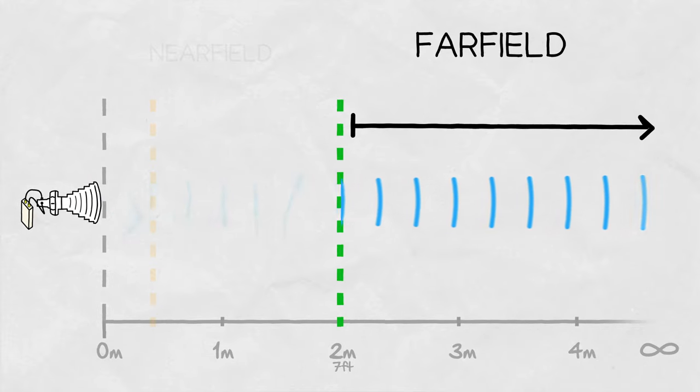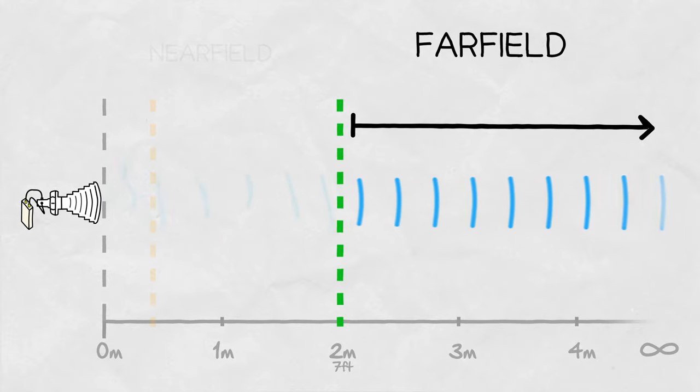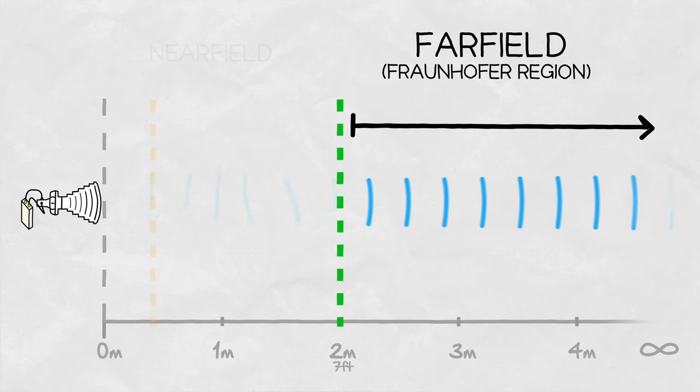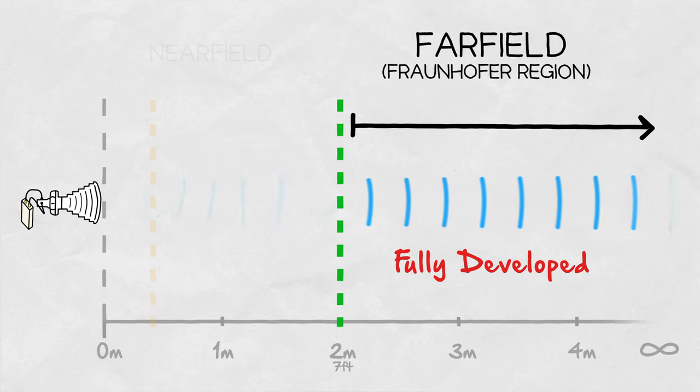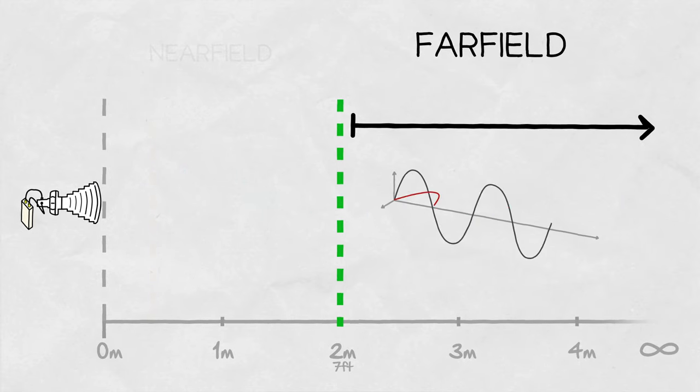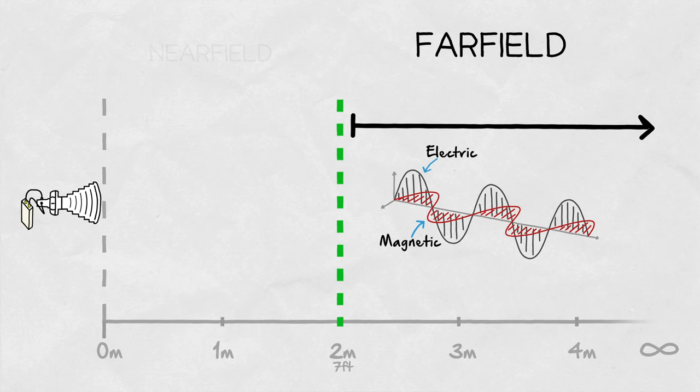the far field region. Also known as the radiation field or the Fraunhofer region, it is the region far away from the antenna where the electromagnetic waves have fully developed and exhibit a simple, predictable behavior. They propagate as planar waves with the electric and magnetic fields perpendicular to each other.